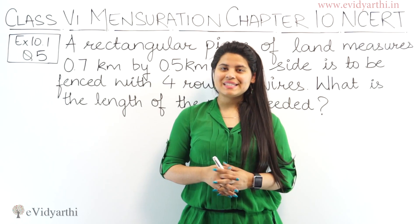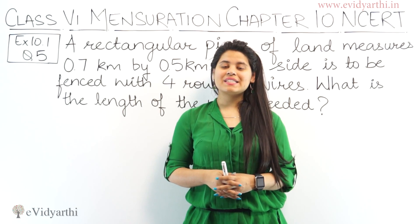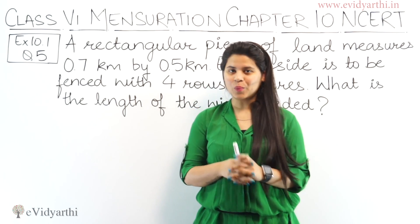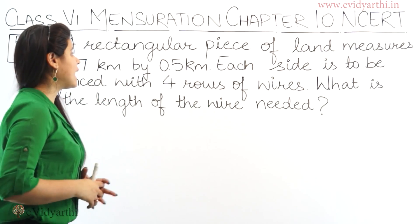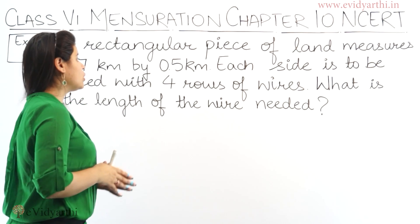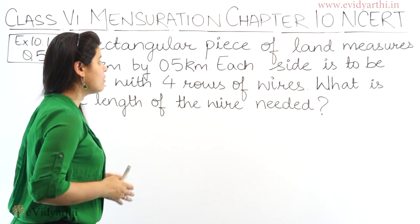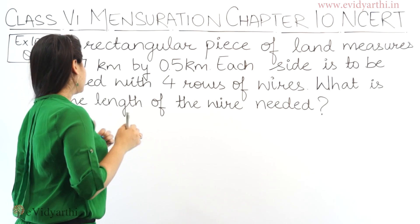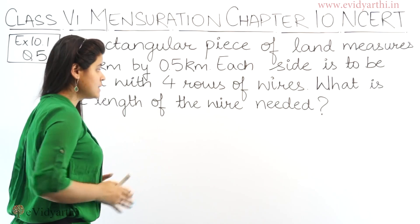Hello everyone, this is Mansi from Enidhati.in. Now we are starting with question number 5, exercise 10.1. In this question we have a rectangular piece of land that measures 0.7 km by 0.5 km. Each side is to be fenced with 4 rows of wires.